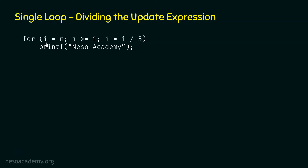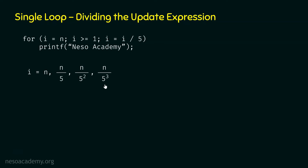In the first iteration, the value of i is N. In the second iteration, the value of i becomes N by 5, because the update expression is i equal to i divide by 5 — the old value N divided by 5 gives the new value. In the third iteration, we get N by 5 squared, because we again divide by 5. In the fourth iteration, we get N by 5 to the power 3.